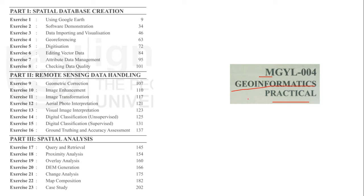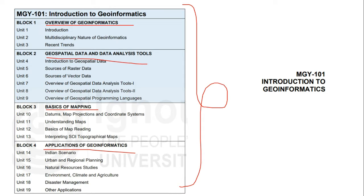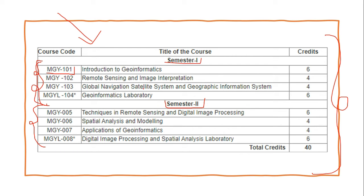The fourth subject in Semester 1 is MGY004 — Geoinformatics Practicals — which includes spatial database creation, remote sensing data handling, and spatial analysis practicals. All practicals will be performed on GIS software like ArcGIS and QGIS, giving you hands-on exposure alongside the theory. Together, Semester 1 covers remote sensing, GIS, and GNSS, which also fall within the GATE Geomatics Engineering syllabus.